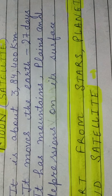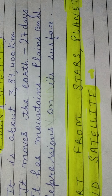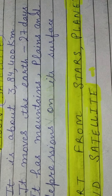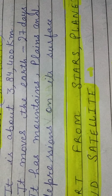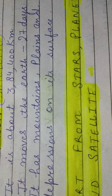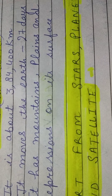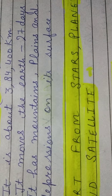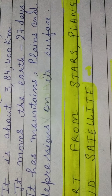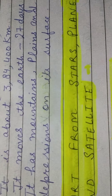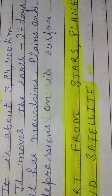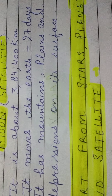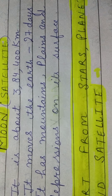The earth has only one satellite, that is the Moon. It moves around the earth in 27 days and it takes exactly the same time to spin. That is why only its one side is visible. The Moon doesn't have conditions favorable for life. It is full of mountains, plains and depressions on its surface.